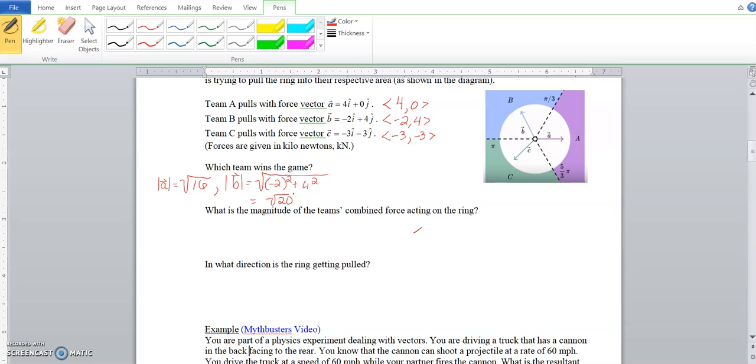I'm going to write it out just so you can see it. And then we've got vector C, the square root on that is negative 3 squared plus negative 3 squared, so the square root of 18. Now you might be able to see why I left the square root of 16 as is, because the resulting magnitudes A, B, and C you can compare them evenly: square root of 16, 20, and 18. Which team wins the game? The team with the largest magnitude, and that is team B.